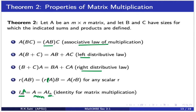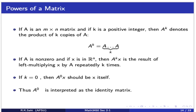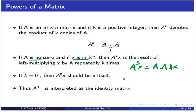Now let's look at powers of a matrix. If A is an n by n matrix and k is a positive integer, then A to the power k means A multiplied by itself k times. If A is non-zero and x is an element of R^n, then A^k times x is the result of left multiplying x by A repeatedly k times. For example, A^3 times x means A times A times A times x. If k equals 0, then A^0 times x should equal x itself, meaning A^0 is the identity matrix.